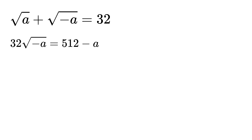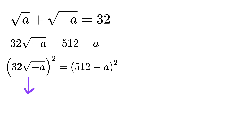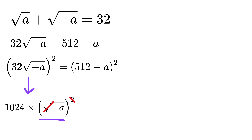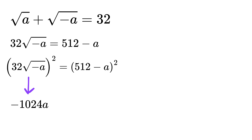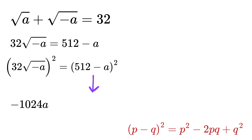Now to eliminate the square root, we again square both sides. The left-hand side becomes 32 squared times the square root of minus a squared. 32 squared is 1024, and the square root of minus a squared is just minus a, so the left-hand side becomes minus 1024a. For the right-hand side, we again apply the identity (p minus q)², which gives us 512 squared minus 2 times 512 times a, plus a squared.